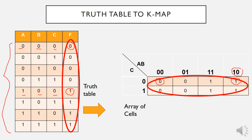K-Maps can be used for expressions with 2 up to 5 variables. But in this lesson, I will only discuss 2, 3, and 4 variable K-Maps to illustrate the principles. The number of cells is equal to the total number of rows in the truth table. So in this example with 3 input variables, we have a total of 8 rows, and the K-Map will also have a total of 8 cells. We will see in detail how to transfer a truth table into the K-Map in the next few slides.